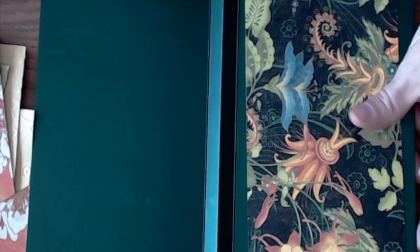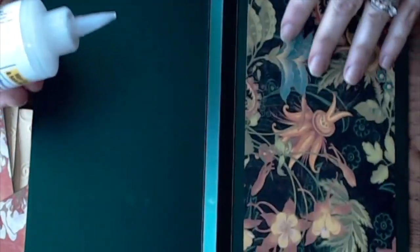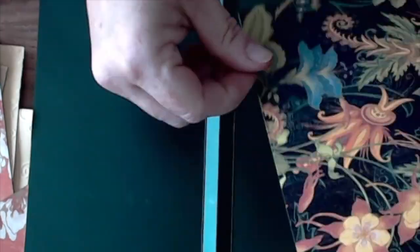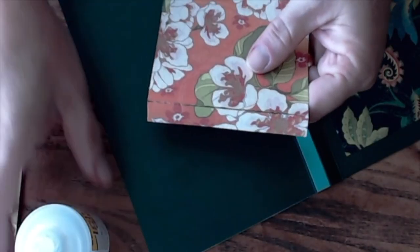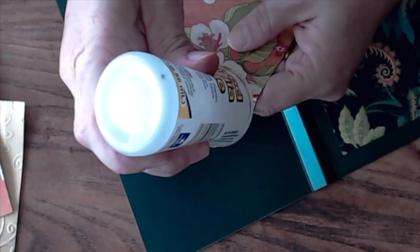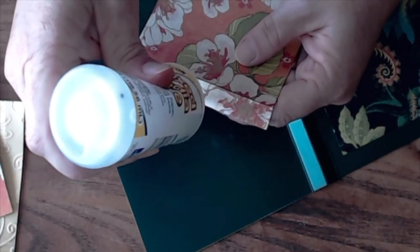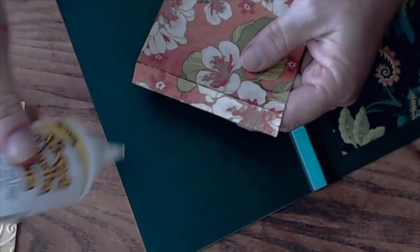Mount the second piece of rectangular patterned paper centered on the inside front cover. Apply adhesive to the folded edge of one of the patterned paper pages. Mount to the inside back cover about a quarter of an inch from the top of the page.